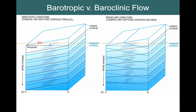If the pressure gradient force is pointing to the left and we are in geostrophic balance, then the Coriolis force must be pointing in the exact opposite direction — to the right. If Coriolis is pointing to the right and we are in the Northern Hemisphere, then our geostrophic current must be going into the page. Since the slope of the isobars giving us our pressure gradient force is not changing, the geostrophic current is constant with depth.